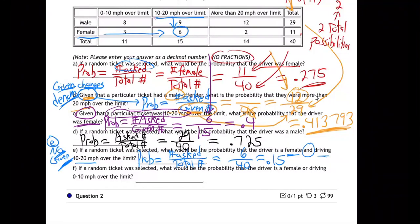They're saying a random ticket was selected — that means out of the whole group, there's not a given. That'd be like me saying I picked somebody at random off the street, what's the chance they're fast? Versus if I say, hey, I picked somebody at random and by the way they were on a soccer team — what's the chance they were fast? If I give you that information, it changes the possibilities.